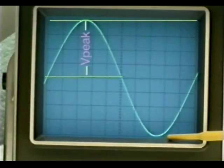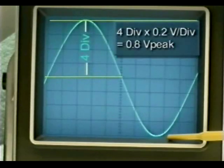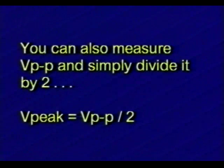The sine wave's peak voltage measurement is simply half of the peak-to-peak value, or from the center of the reference of the trace to the uppermost positive peak of the waveform. In this example, the sine wave's peak voltage is four divisions from the center reference ground trace. Four divisions multiplied by 0.2 volts per division gives us 0.8 volts peak. You can also measure the peak-to-peak voltage of the sine wave and divide it by two.